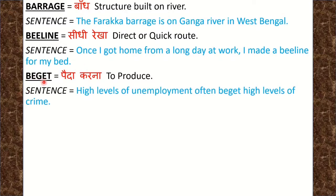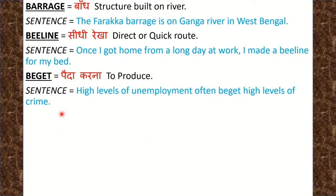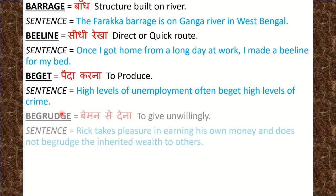Next word is Beget. Beget means पैदा करना, to produce. इसका एक मुहावरा भी है: money begets money. Sentence: High levels of unemployment beget high levels of crime. यानि बहुत ऊँचे level की बेरोज़गारी, बहुत ऊँचे level के अपराध को जन्म देती है.